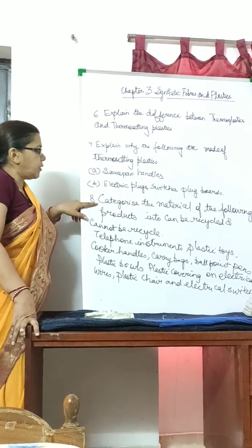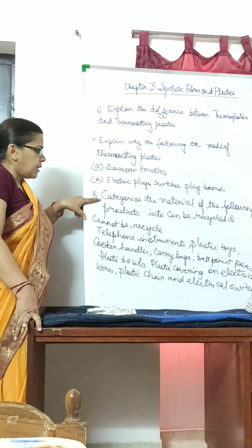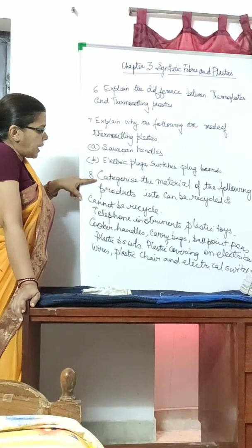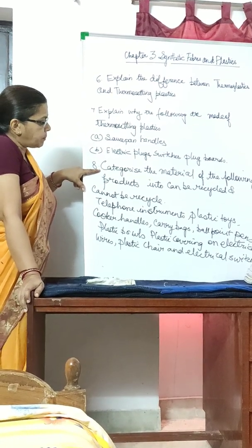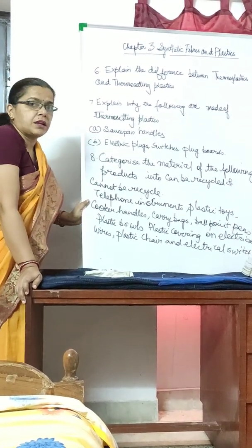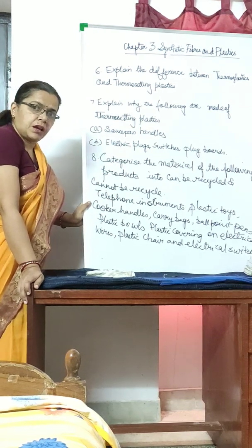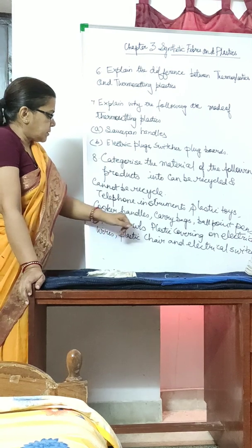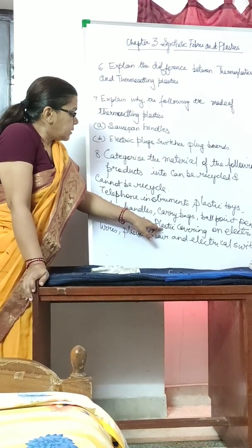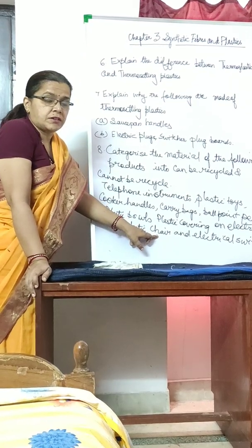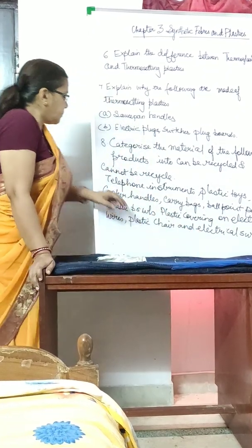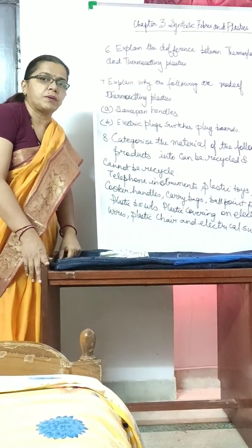Question seven: Categorize the following products into those that can be recycled and those that cannot. Items like plastic toys, carry bags, ballpoint pens, plastic balls, and plastic chairs can generally be recycled. Electrical switches, telephone instruments, cooker handles, and certain plastic toys cannot be recycled.